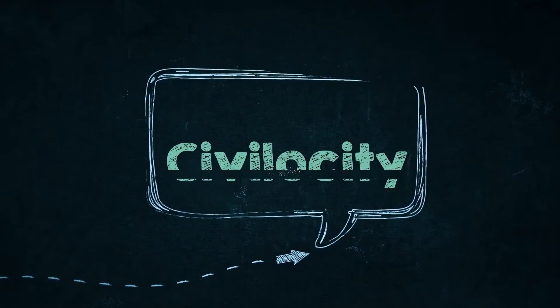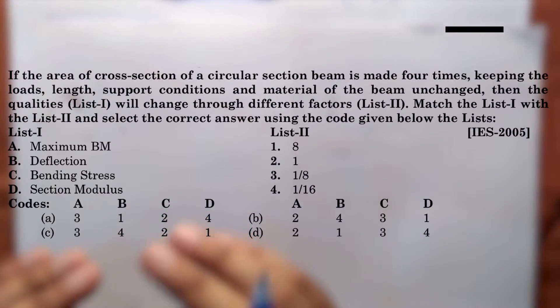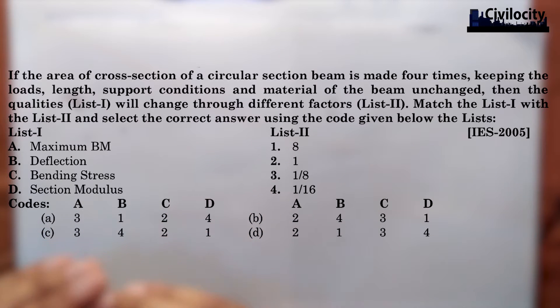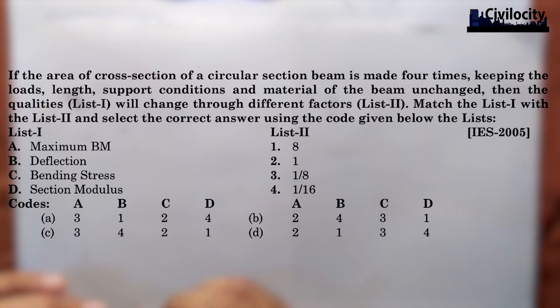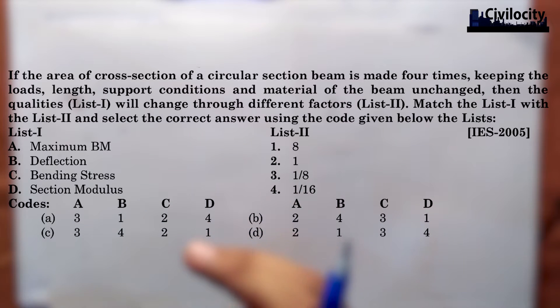Let's look at the second question, which is still on your screen. It says that if the area of a cross-section of a circular section beam is made four times, keeping the load, length, support condition, and material of the beam unchanged, then certain quantities will change through different factors. We need to match list 1 with list 2 and select the correct answers using the code given below the lists.